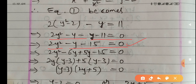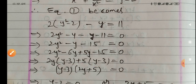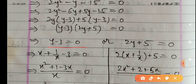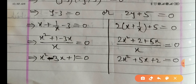Factorizing 2y squared minus y minus 15 equals 0: 2y squared minus 6y plus 5y minus 15 equals 0. In first two terms 2y is common giving (y minus 3); in last two terms 5 is common giving (y minus 3). So (y minus 3)(2y plus 5) equals 0. When y minus 3 equals 0, substituting y equals x plus 1 upon x gives x squared minus 3x plus 1 equals 0.